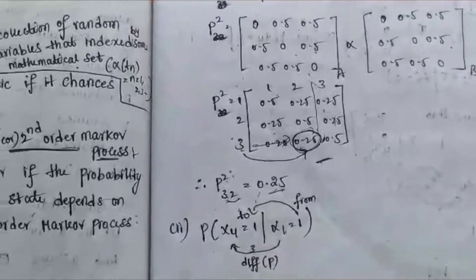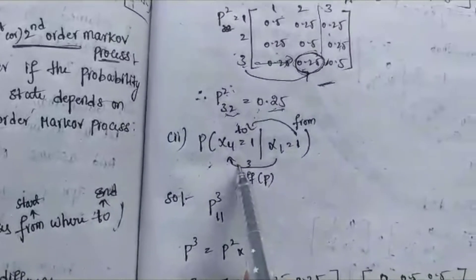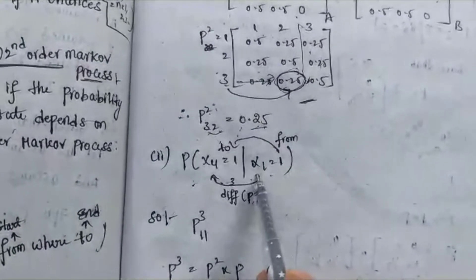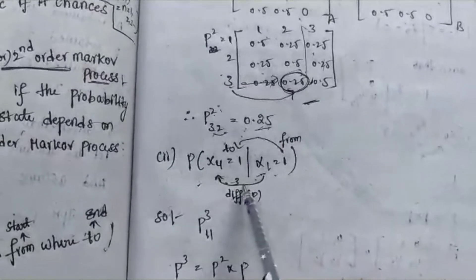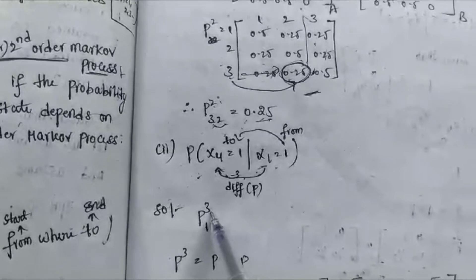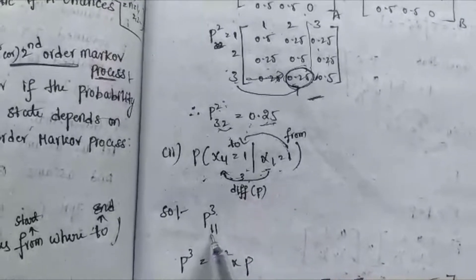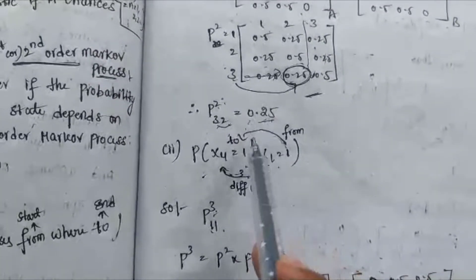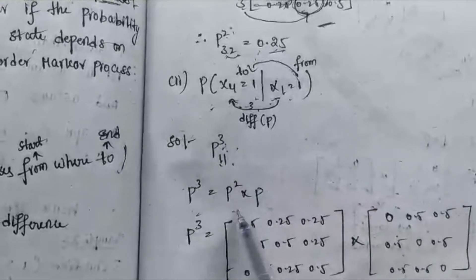The next problem is P(X4=1 | X1=1). The difference between periods X1 and X4 is 3, so we take P cubed, moving from state 1 to state 1, written as P³ with suffix 1 to 1. P cubed means P squared × P.